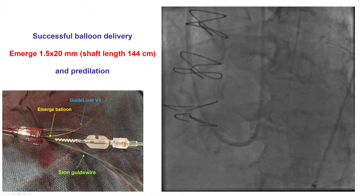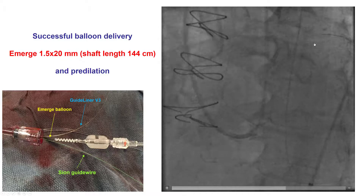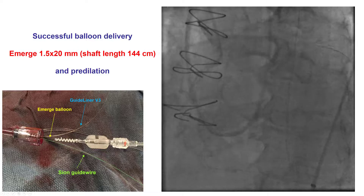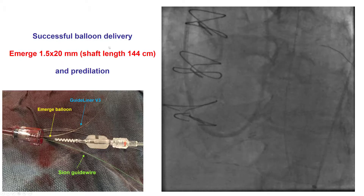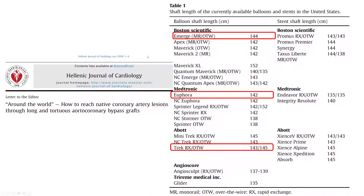By doing that, we were able to advance a balloon to reach all the way to the target lesion. It was very challenging — there was very little part of the balloon left before reaching the target lesion. The balloon shaft was 144 cm, highlighting the importance of knowing equipment lengths. For example, the Trek monorail is 143 cm, 142 cm for the Euphora, and 144 cm for the Emerge. The Sprint over-the-wire balloon is 152 cm, making it useful for very distal lesions. Similarly for stents: the Xience is 140 cm, the Synergy is 144 cm, and the Zion's Alpine and Expedition is 145 cm.